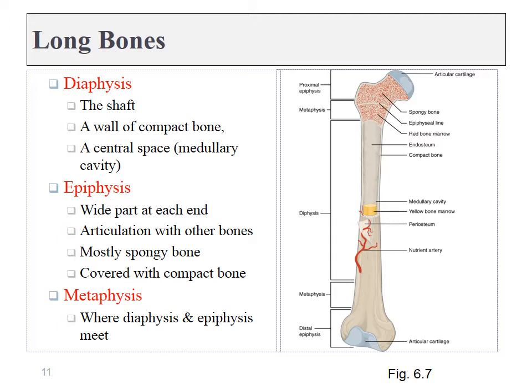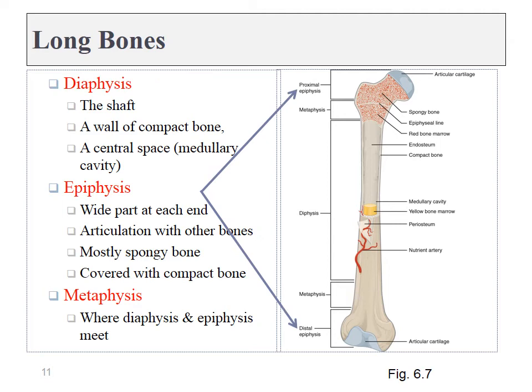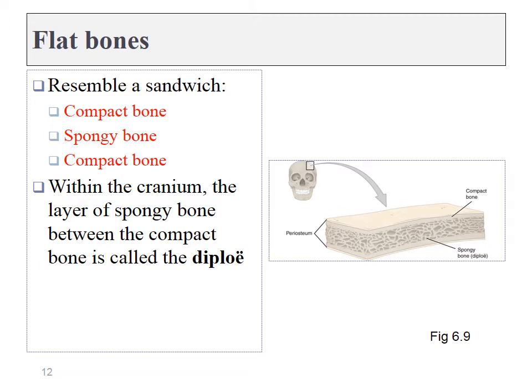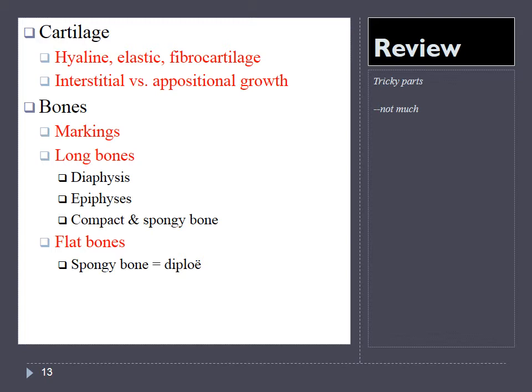In arms and legs, we have a number of long bones with similar shapes that we give names. The diaphysis is the shaft or long central portion, whereas the weird bumps on the ends are called the epiphyses. Where those two meet is called the metaphysis. In the skull and a few other places, there are flat bones — sandwiches of compact bone with spongy bone in the middle. If spongy bone is difficult to remember, you can also call it diploë.